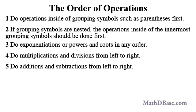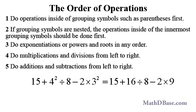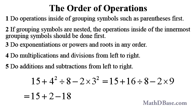Rule 5: Do additions and subtractions from left to right. Given this expression, square the 4 and 3 first, then do the division and multiplication, and then add and subtract from left to right to get negative 1.